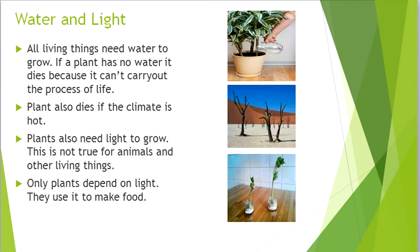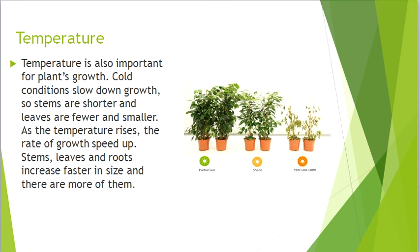Plants also need light to grow. This is not true for animals and other living things — only plants depend on light. They use it to make food. Temperature also affects the plant. Cold conditions slow down the growth of the stem and make leaves shorter, fewer and smaller. As the temperature rises, the rate of growth speeds up — the stem, leaves and roots increase faster in size and there are more of them.